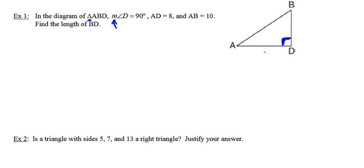Side AD has length 8. I'm going to label that in the picture. Side AB has length 10. I'm going to label that in the picture. They want us to find the length of side BD. So I'm going to label that with an X in my picture. So now I've got a right triangle where I know the length of two out of the three sides, and I want to find the third. This is a perfect setup for using the Pythagorean theorem.